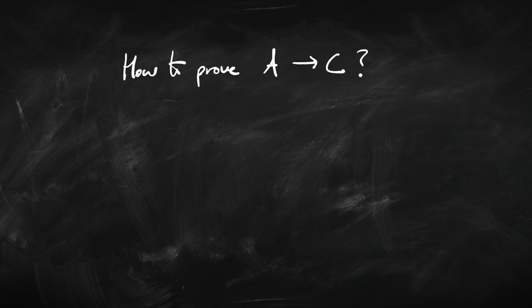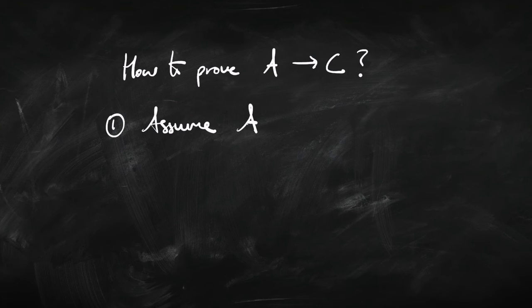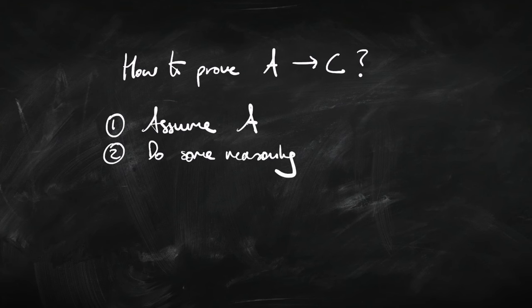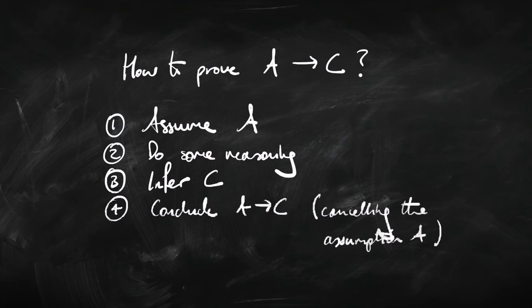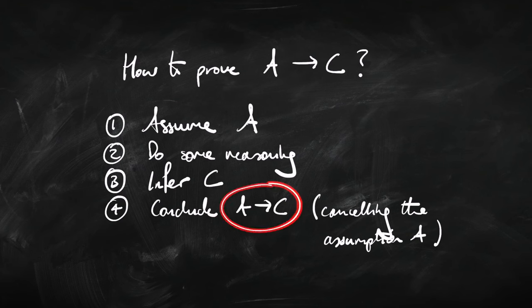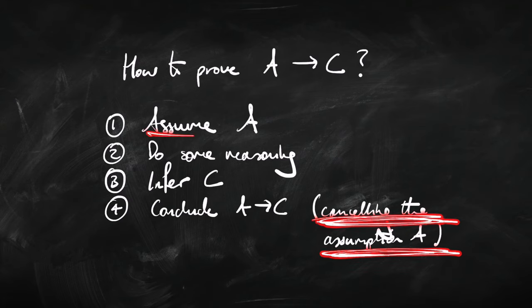Here's what conditional proof does. Suppose we want to prove a conditional — if A, then C. First, we assume that A is the case. Then we do some reasoning, following the other rules, and try to infer C. So we start with A and try to get to C. If we can do that, we can conclude the sentence we aimed for: if A, then C. And importantly, when we infer if A then C, we cancel out the initial assumption of A.